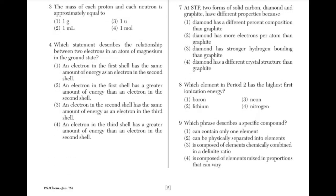The mass of each proton and each neutron is approximately equal to? The answer is 3: 1u. A proton and neutron each weigh one atomic mass unit.